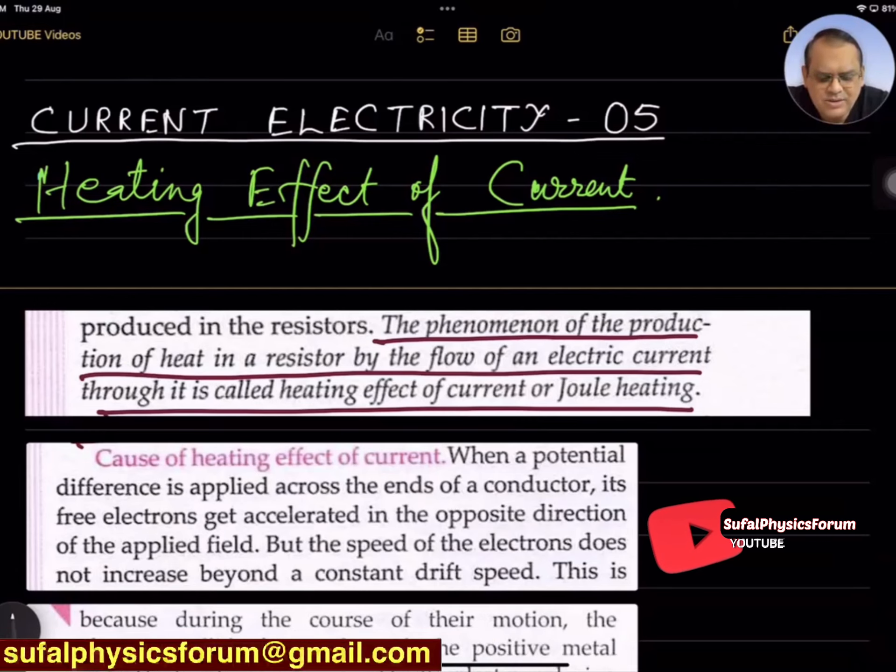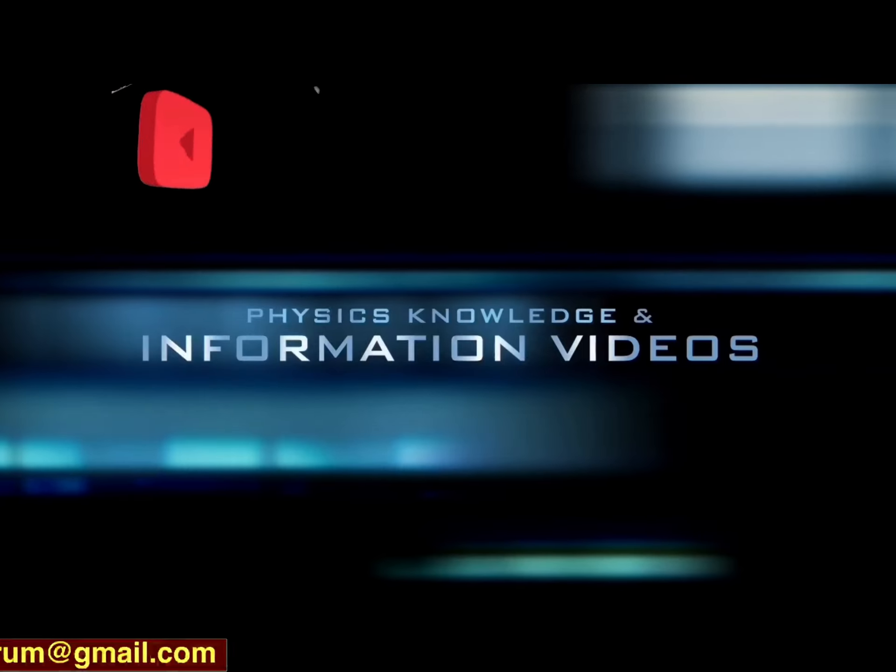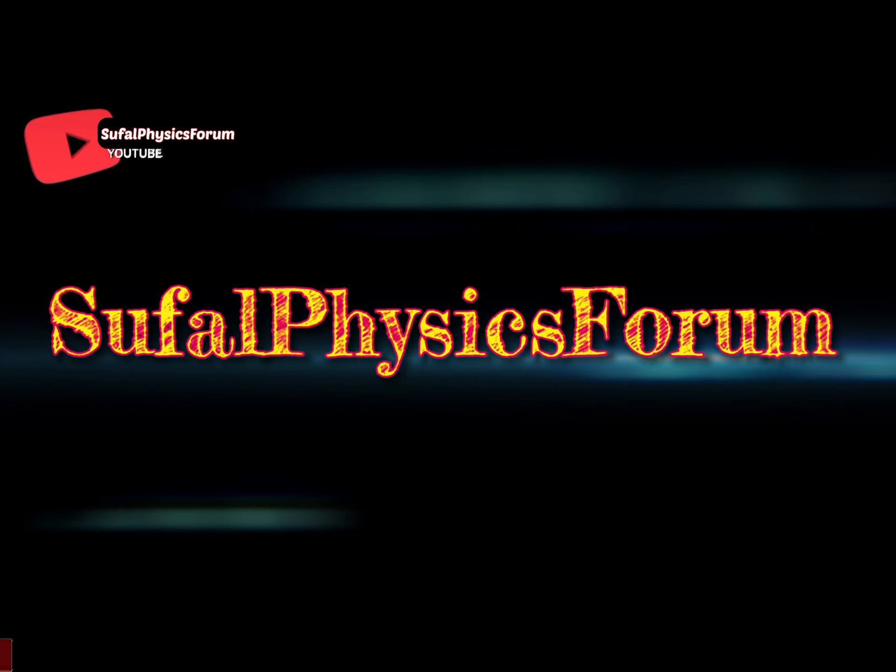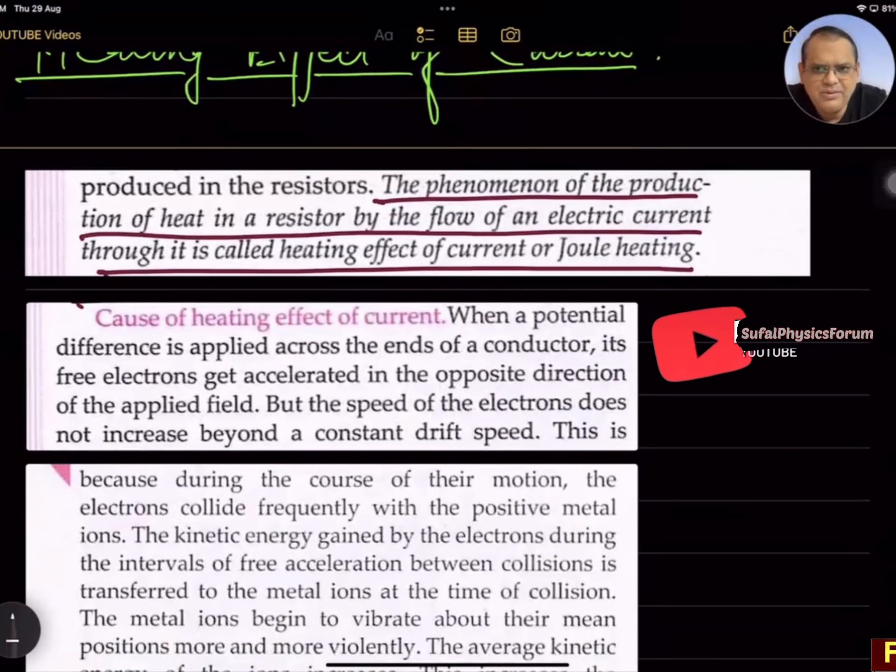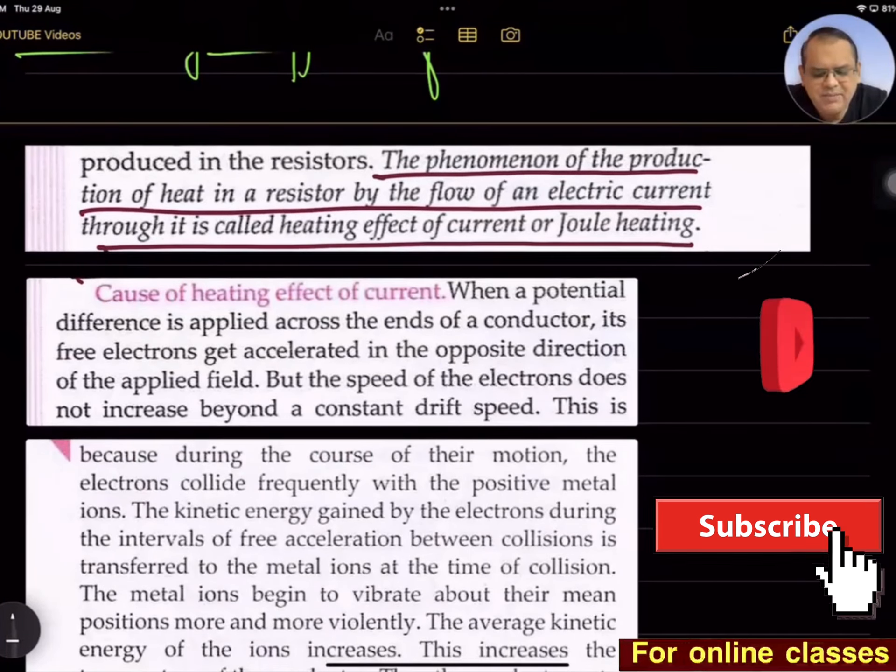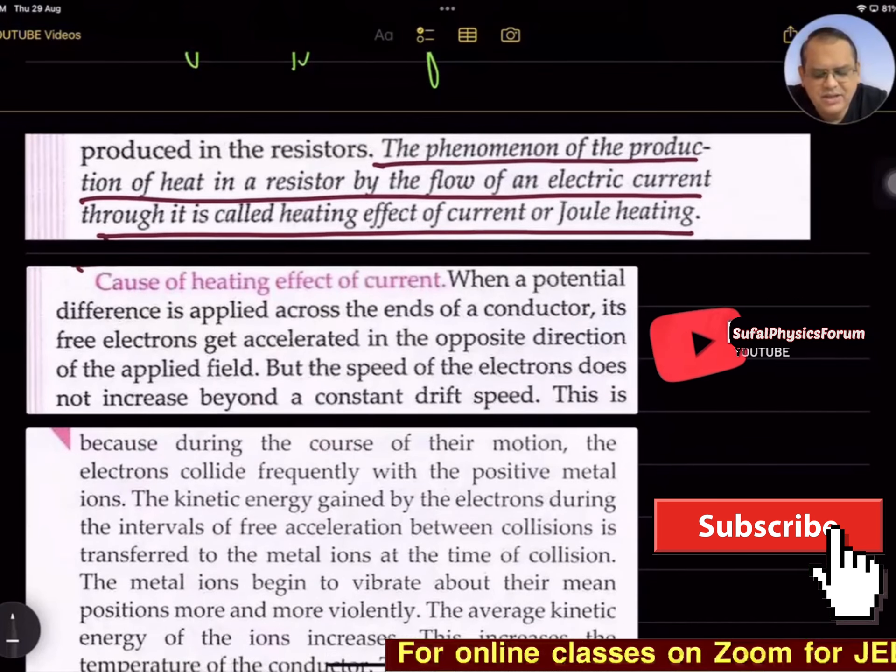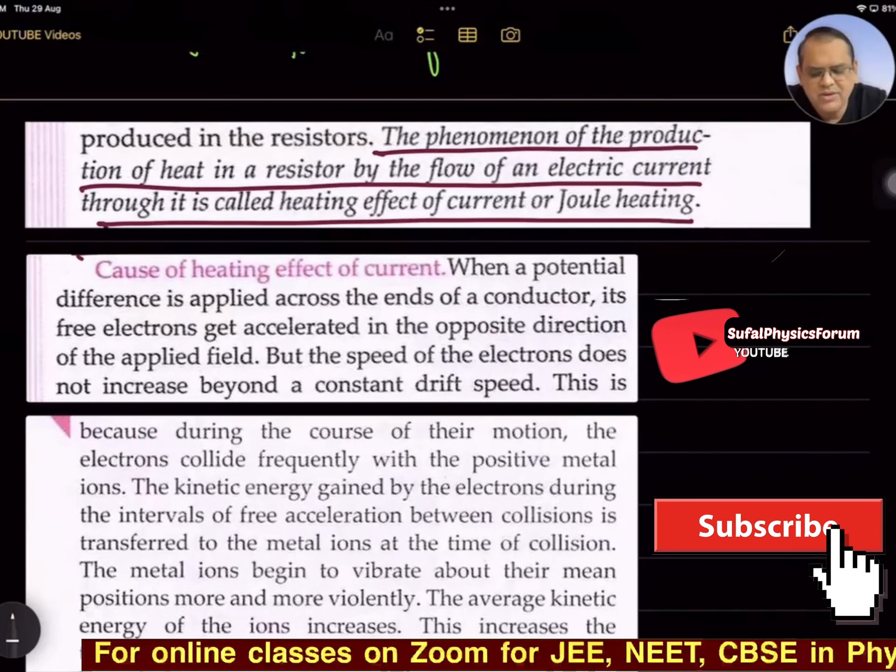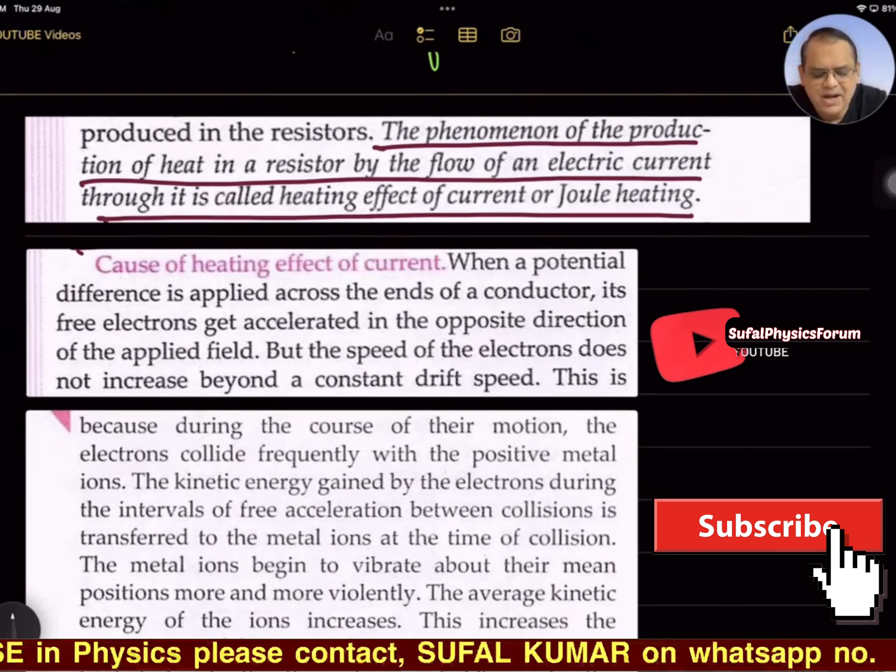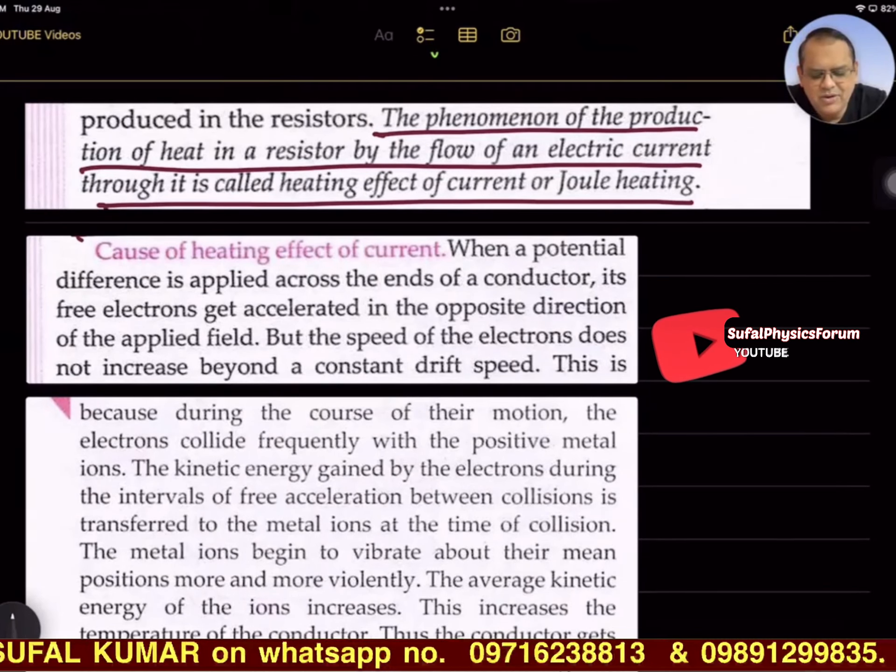What is the cause of this heating effect? Let me find out some keywords. Whenever potential difference is applied across the ends of a conductor, its free electrons get accelerated in the opposite direction of the applied field, but the speed of electrons does not increase beyond a constant drift speed.